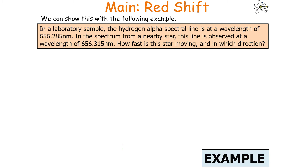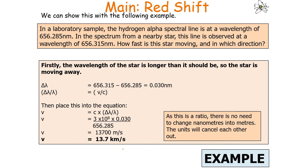Worked example: In a laboratory sample, the hydrogen alpha spectral line is at a wavelength of 656.258 nm. In the spectrum from a nearby star, this line is observed at 656.315 nm. How fast is this star moving and in which direction? Since the observed wavelength is longer than the lab value, the star is moving away. Calculate Δλ, then apply Δλ/λ = v/c, rearranging to v = c × (Δλ/λ). Since Δλ/λ is a ratio, there's no need to convert nanometres to metres. The answer is 26,000 m/s, or approximately 13.7 km/s.